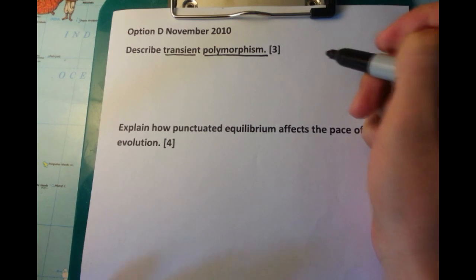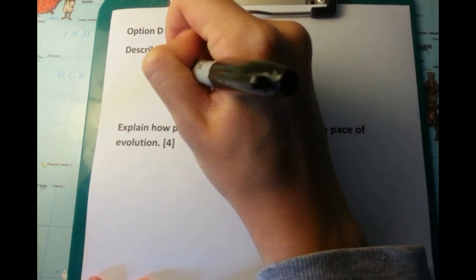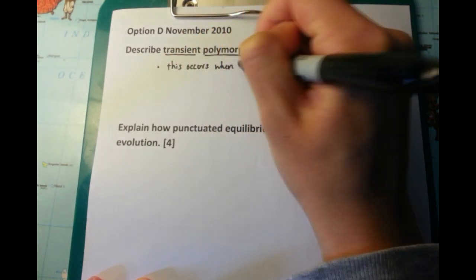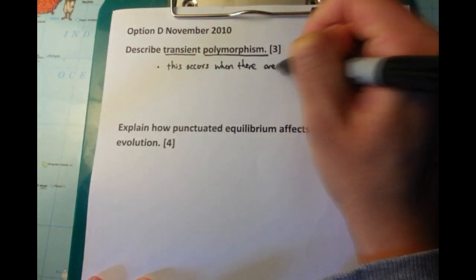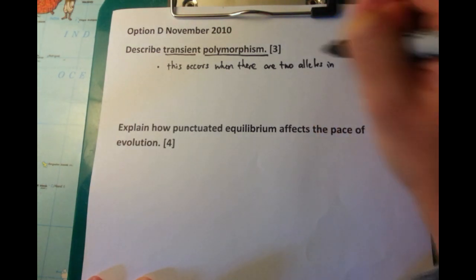So option D, this is actually a paper that I didn't do during my high school years, but I had a look and it's quite an interesting topic. The first thing we're going to talk about is transient polymorphism, and we need to talk about what it is, or describe it.